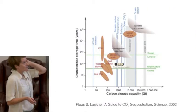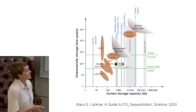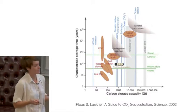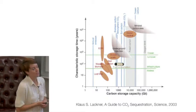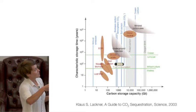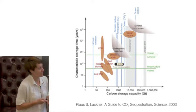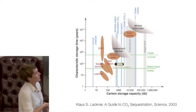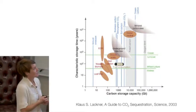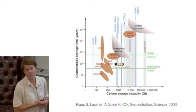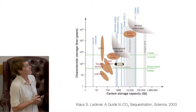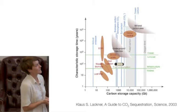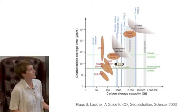Coming back to the issue of scale and trade-offs between different strategies, I think we should keep all strategies on the table. This log-log plot shows the characteristic storage time for carbon in different sequestration strategies versus storage capacity. Underground injection sites have close to a thousand gigatons of storage relative to our seven or eight gigatons of CO2 emitted, and CO2 in these environments would be stable for upwards of a thousand to ten thousand years. Of course, there's huge uncertainty on this diagram, but that's what our basic understanding tells us.